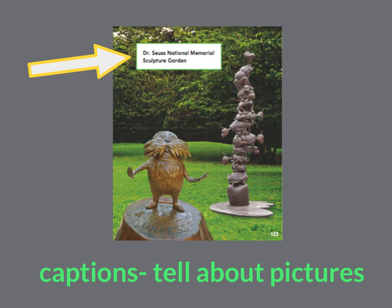Let's take a look at this page from our story. Our arrow is pointing to a box with some words in it. Do you know what we call those words? They're called captions. Captions tell us more information about pictures. So I can read this caption to find out more about my picture. It says: Dr. Seuss National Memorial Sculpture Garden.